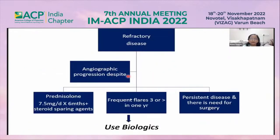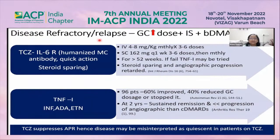If the disease is refractory — angiographic progression despite steroids and steroid-sparing agents, three or more flares per year, persistent disease, or need for surgery — biologicals should be used. For relapsing or refractory disease, increase steroids, add immunosuppressants, and consider biologicals. Tocilizumab is given for 52 weeks; if it fails, TNF inhibitors may be tried.